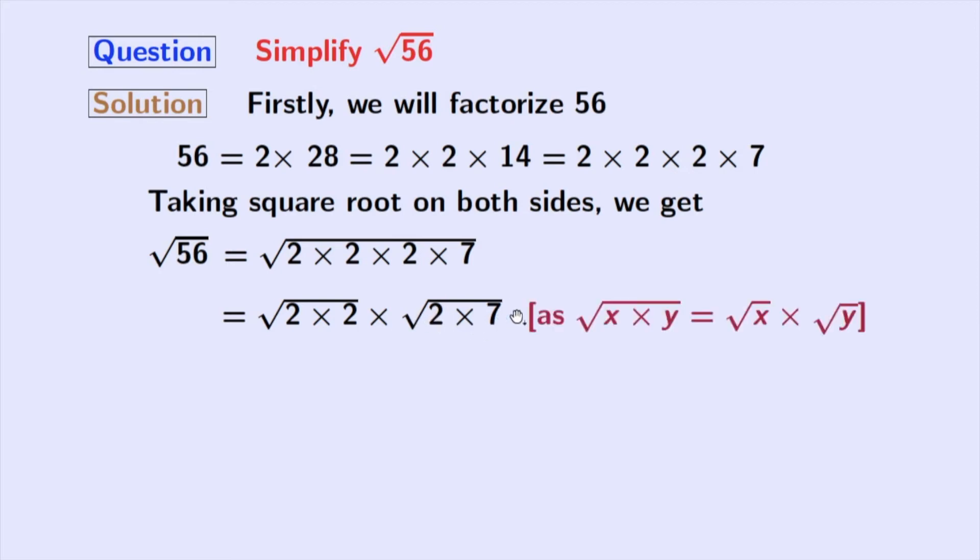We have used the rule of square root of x times y is equal to square root of x times square root of y. Here, x is 2 times 2 and y is 2 times 7.